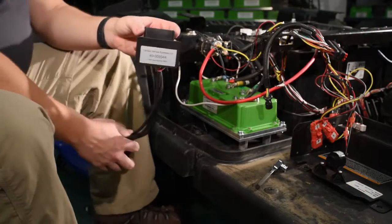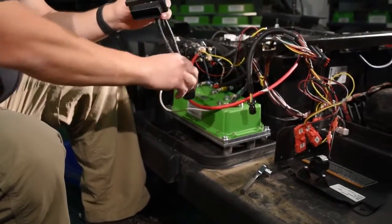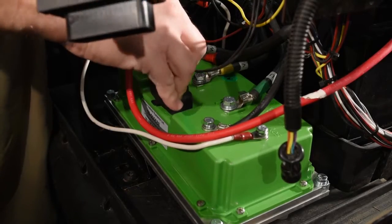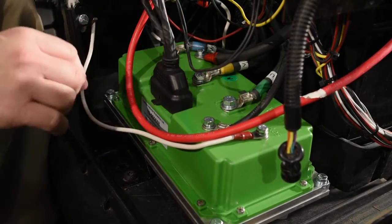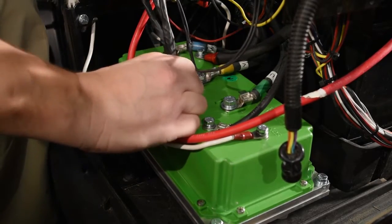This is the RX-V adapter harness. Install it into the controller by gently inserting it without forcing any pins - it should slide in freely. Then push in on the bottom of the tab to lock the connector in place.